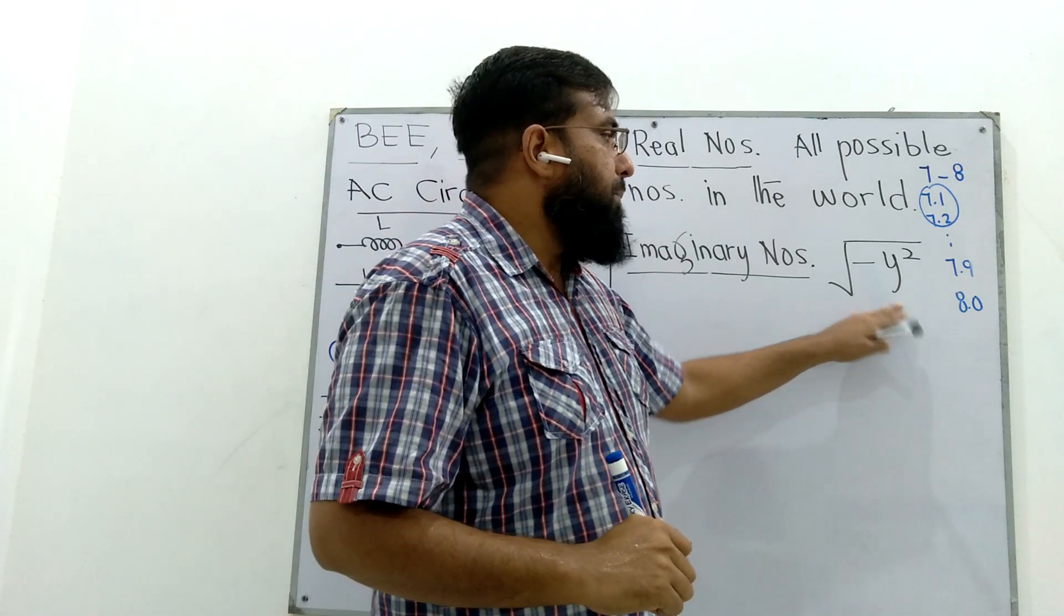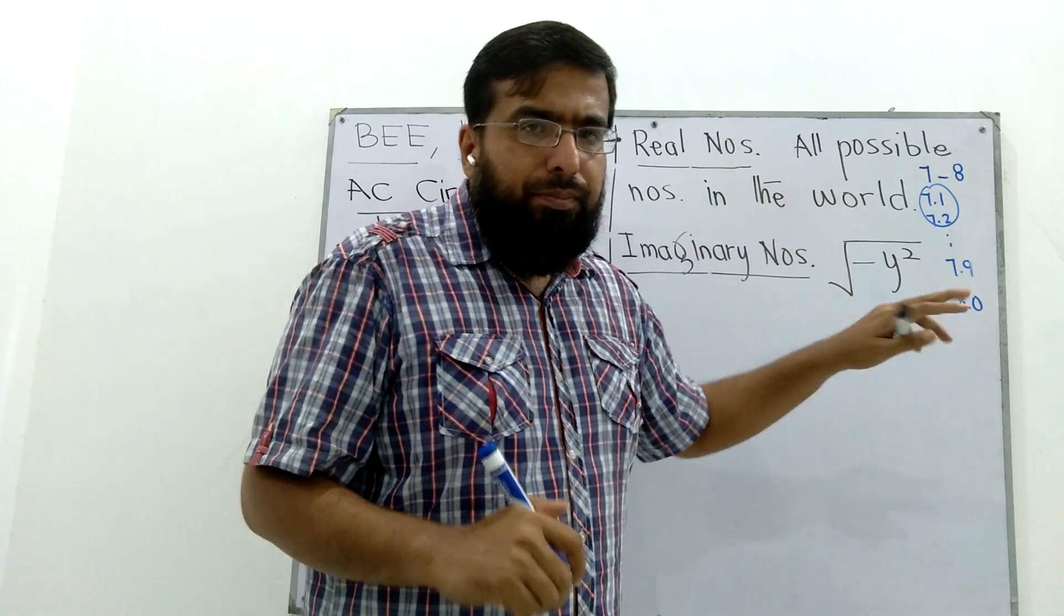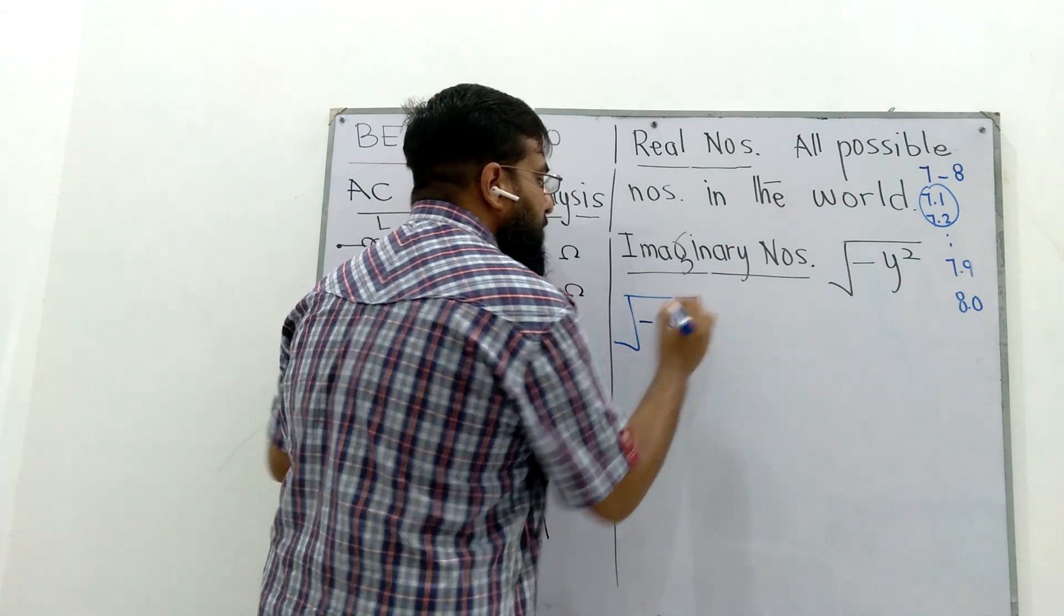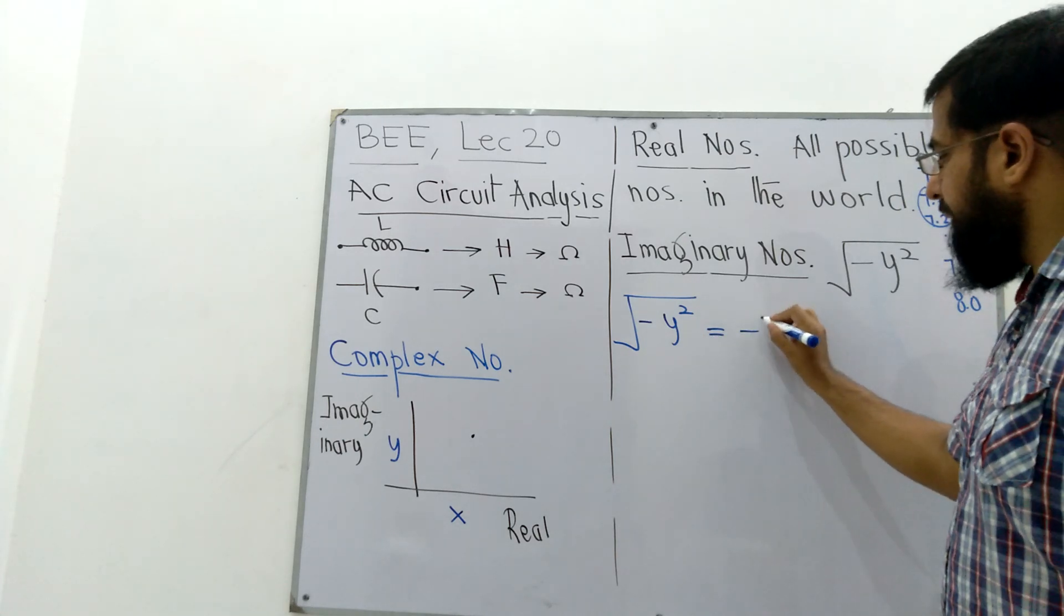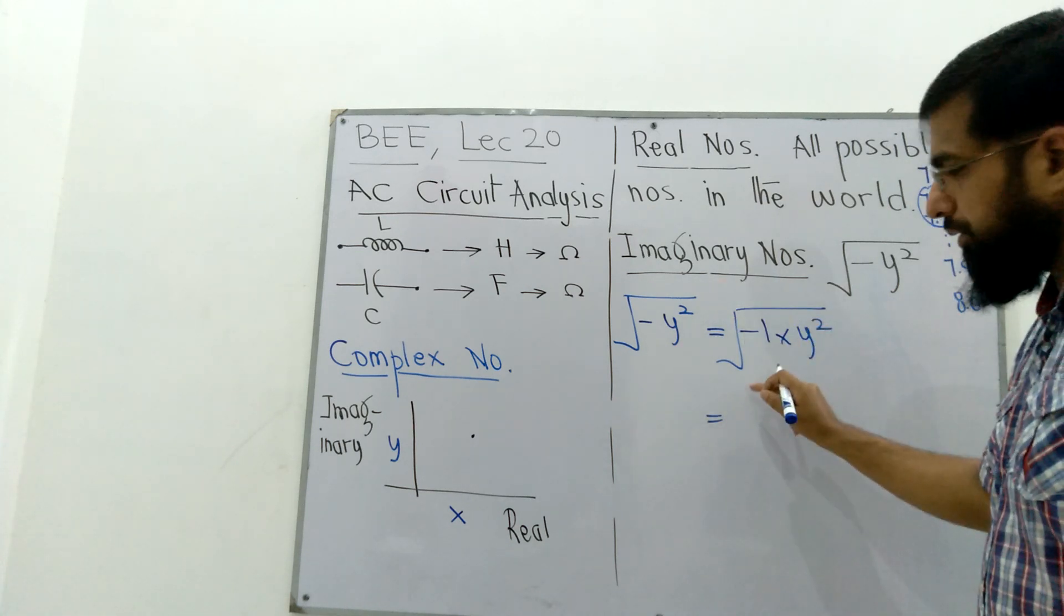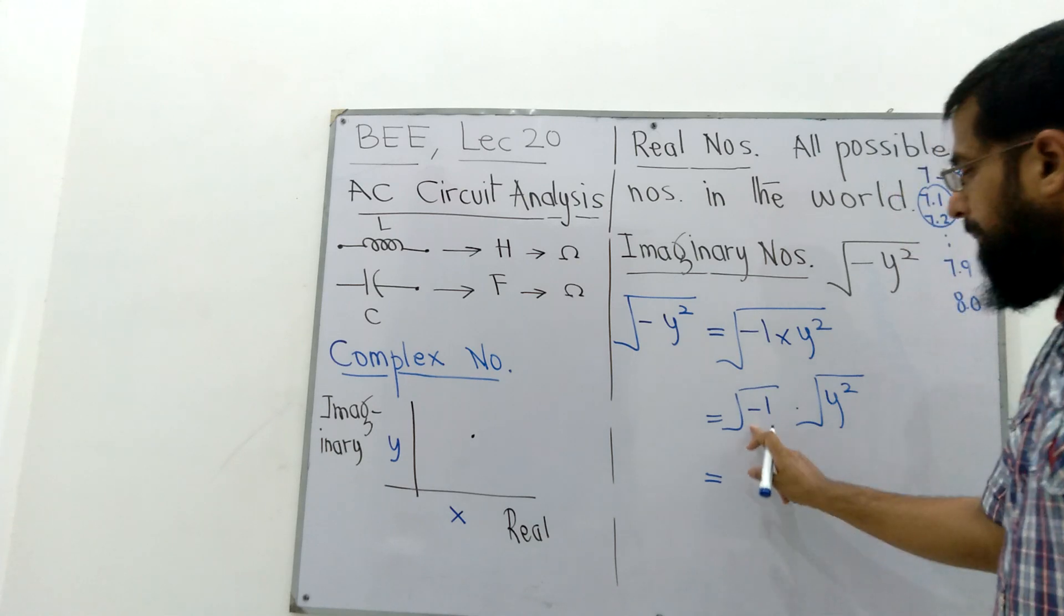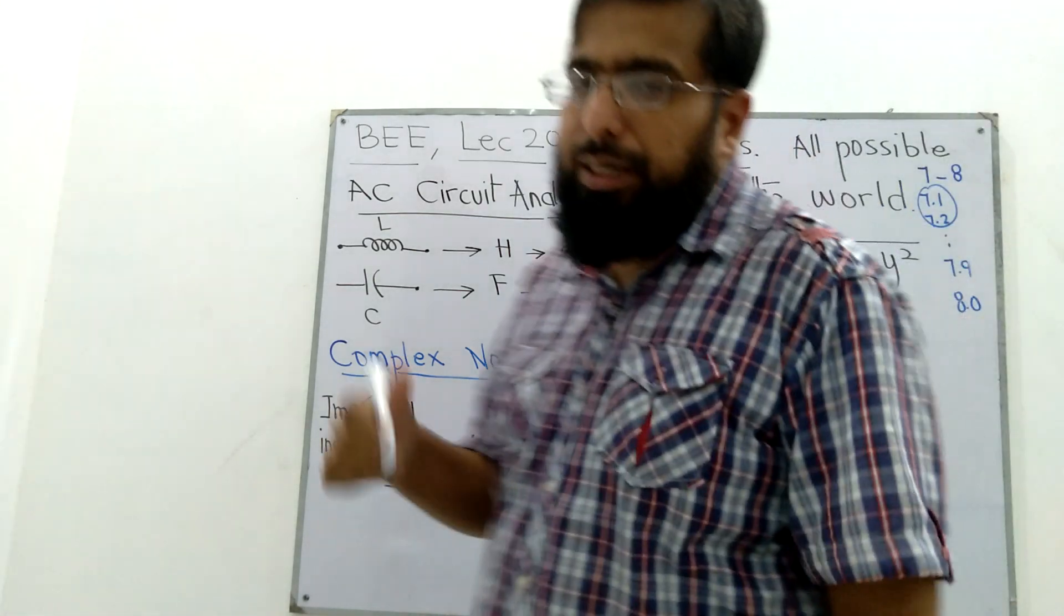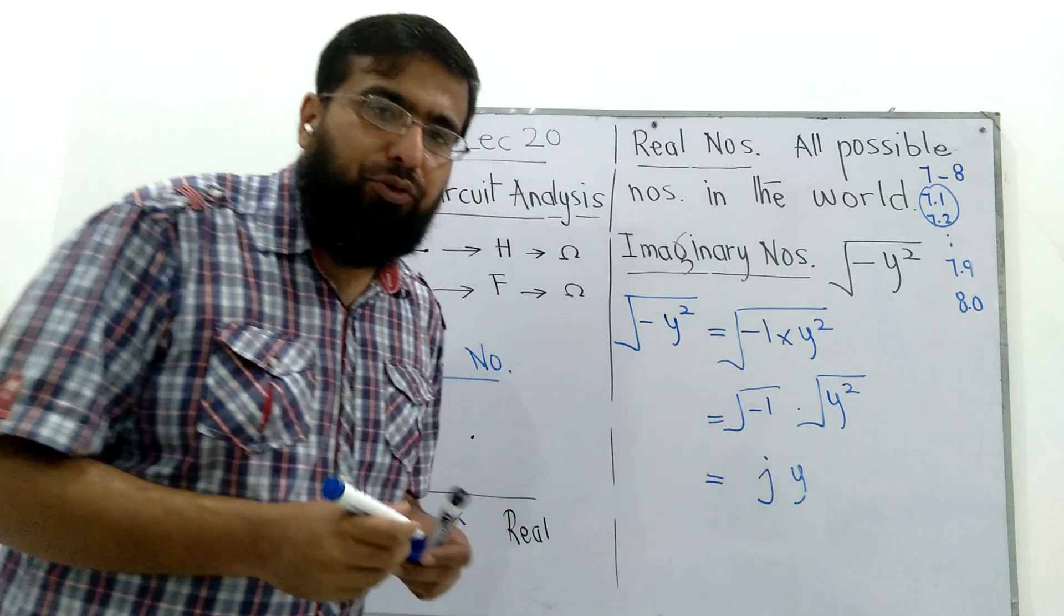Imaginary numbers are real numbers but they contain a square root of a negative number that cannot be solved using ordinary methods. For example, the square root of minus y squared can be solved by separating minus 1 and y squared. Square root of a times b can be written as square root of a times square root of b. This can be written as y times square root of minus 1. This minus 1 square root is given a special name that we call iota or j. For electrical engineers, we usually use the letter j because they use small i for currents most of the time.